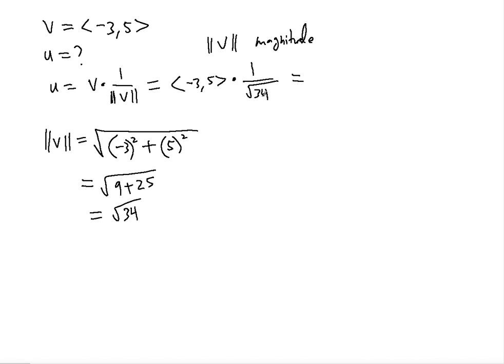and remember that 1 over √34 is a number, a constant. So when you multiply a constant to the given vector, you multiply each component of the vector by that constant.